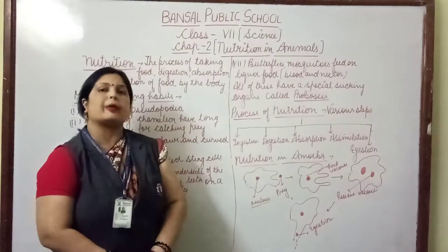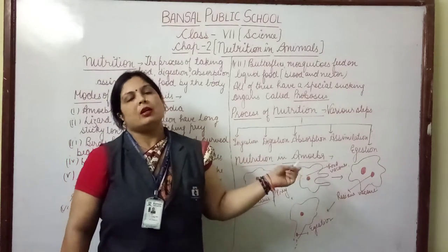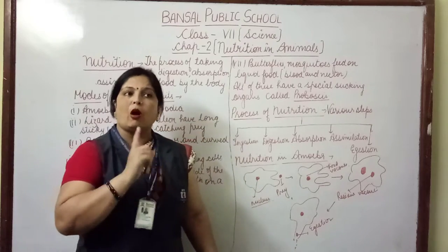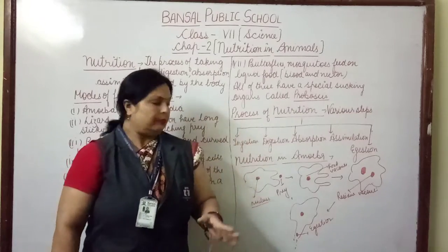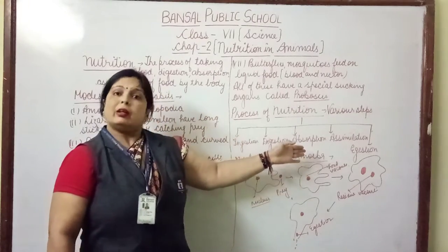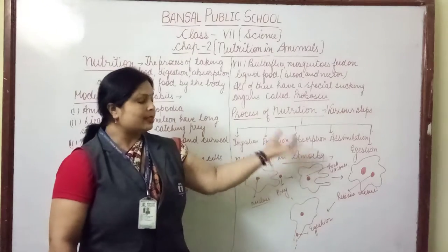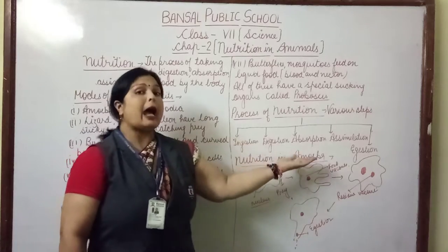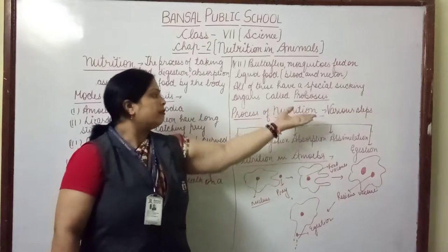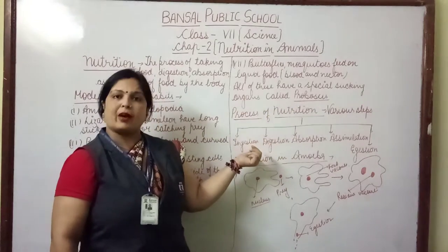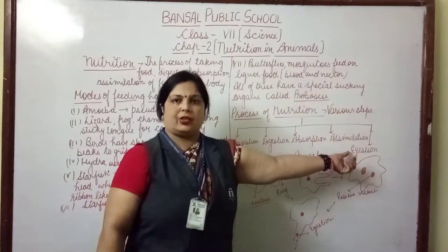Now the next topic is nutrition in amoeba. Amoeba is a unicellular organism, meaning its body consists of a single cell, and all physiological functions are carried out by that single cell. Amoeba is an aquatic animal that lives in water and receives its food from water. Amoeba is also a holozoic organism, which involves five steps of nutrition: ingestion, digestion, absorption, assimilation, and egestion.